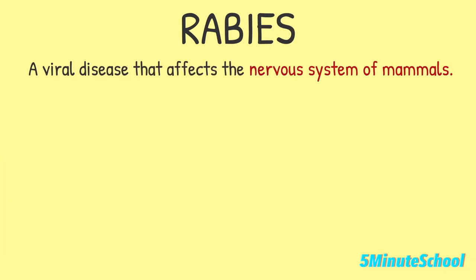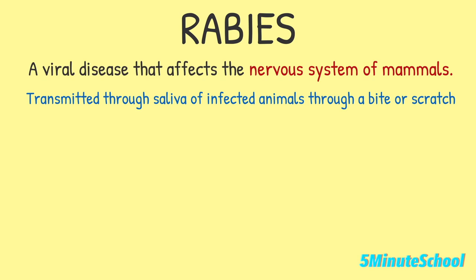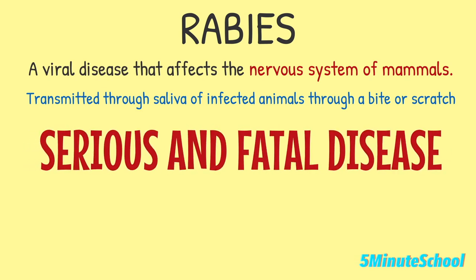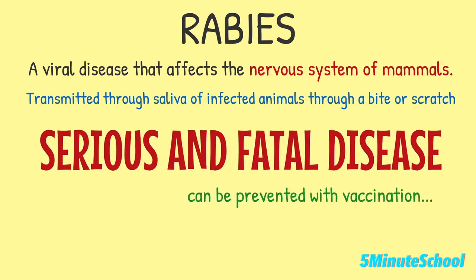Rabies is a viral disease that affects the nervous system of mammals, including humans. It's transmitted through the saliva of infected animals, usually through a bite or a scratch. Rabies is a serious and often fatal disease, but it's also preventable through vaccination.